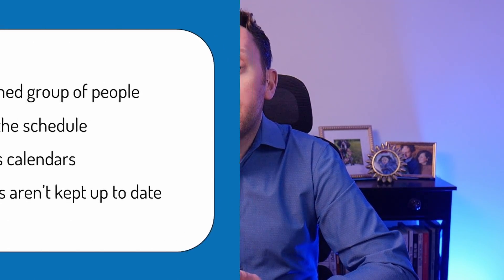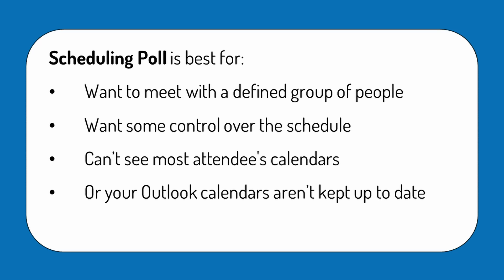Once everyone has completed this process, if a mutually workable time is selected the meeting will get set up. Scheduling Poll is best when you still have a defined group of people to meet with, you want some control over when the meeting is scheduled but have a range of options to give your guests, you don't necessarily have access to everyone's free or busy information — perhaps some attendees are from outside your organisation — or you don't have a culture of keeping Outlook calendars up to date.